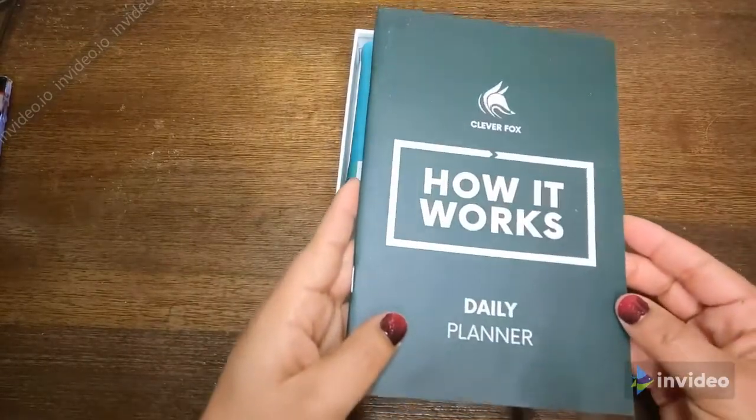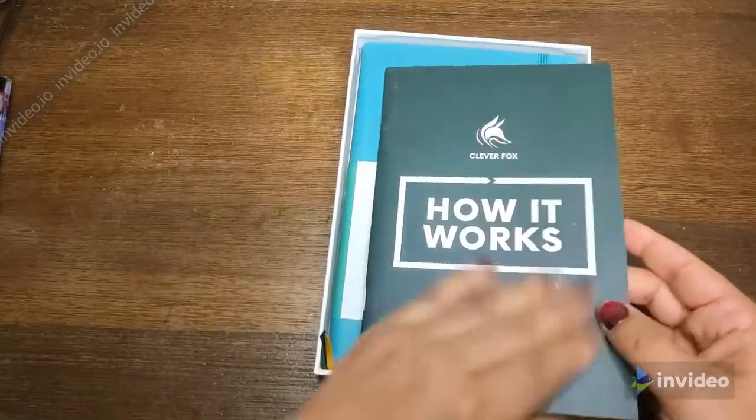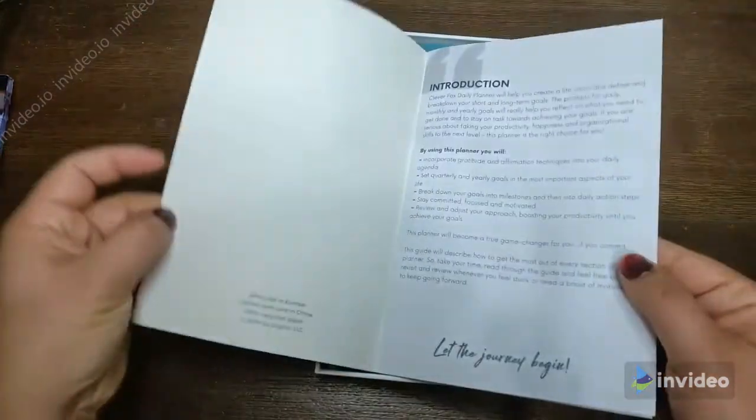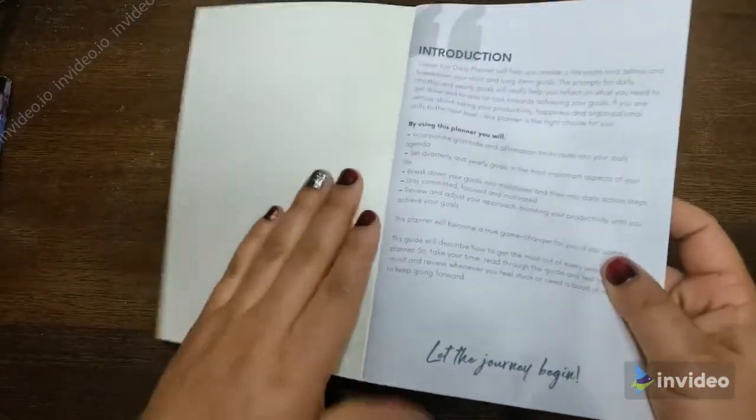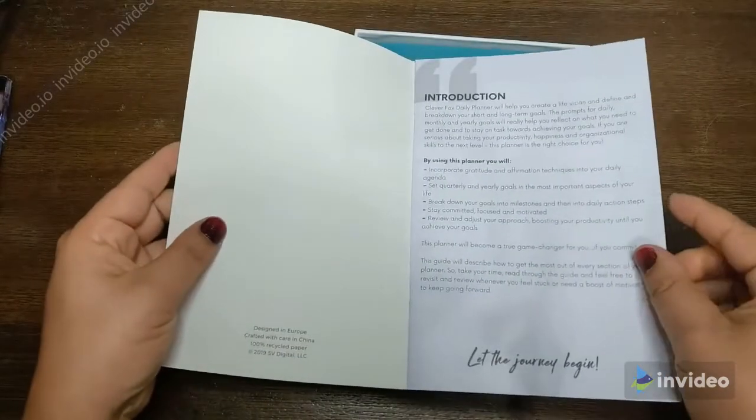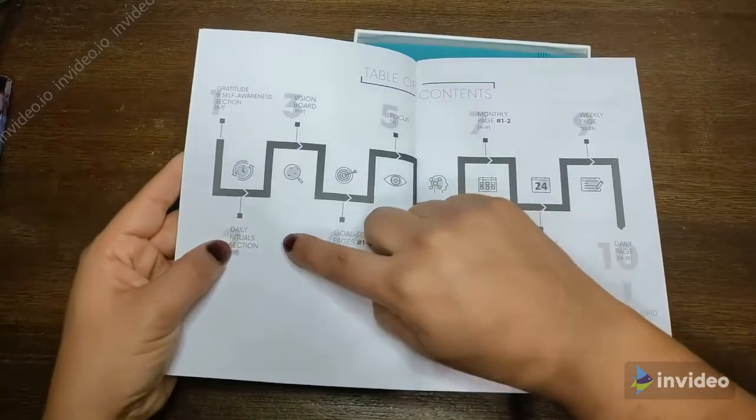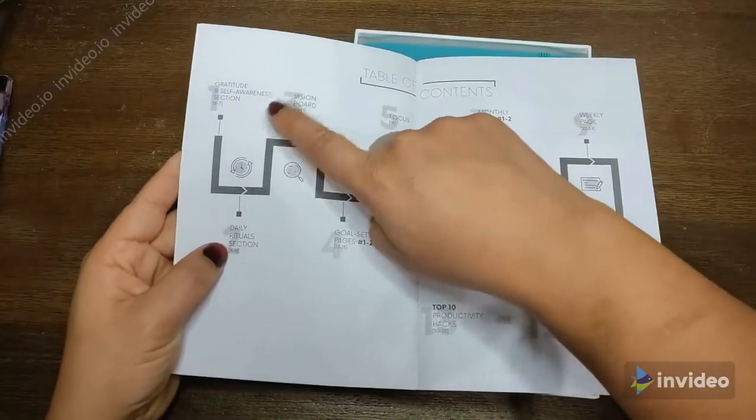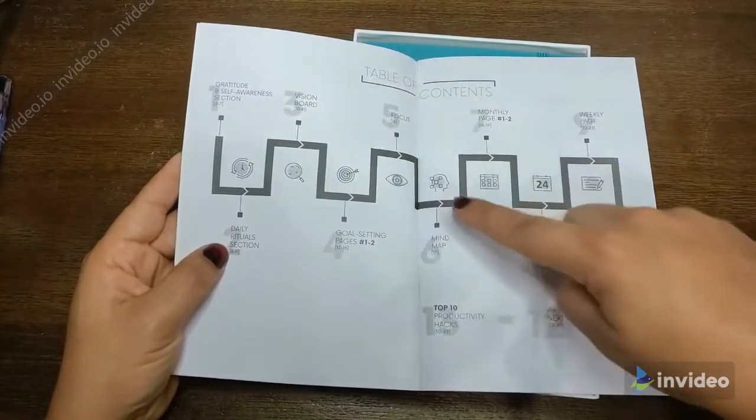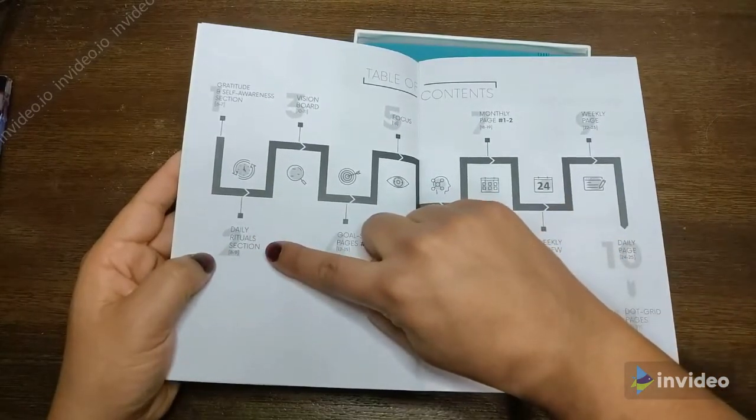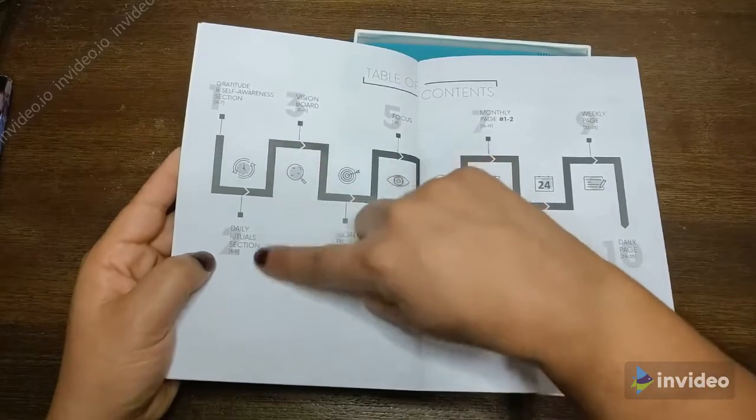So the first thing you get is a little instructional manual on how the planner works. One of the things I liked about it had a review process, so there's different sections. It looks like a place for gratitude and self-awareness, a vision board, a daily rituals thing. I'm really into doing morning routines and one of the things that really helps me is to be able to write it down.